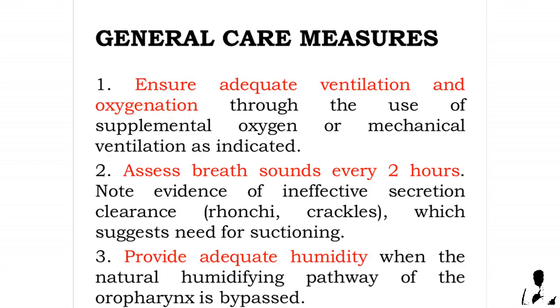Nursing care for patients with artificial airways — general care measures. One: ensure adequate ventilation and oxygenation through the use of supplemental oxygen or mechanical ventilation as indicated. Two: assess breath sounds every two hours, noting evidence of ineffective secretion clearance such as rhonchi or crackles, which suggests the need for suctioning. Three: provide adequate humidity when the natural humidifying pathway of the oropharynx is bypassed.